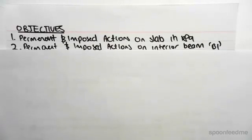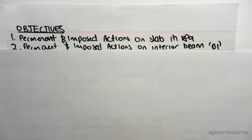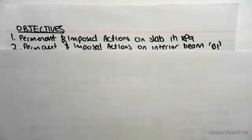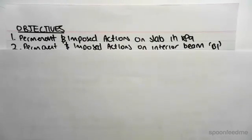Hey guys, welcome to the second example of permanent and imposed actions. This example is going to differ a bit from the first one because the slab is going to behave like a two-way slab. The previous slab behaved like a one-way slab, so it's going to change up the process a bit. I recommend you watch this video — it's going to help a bit.